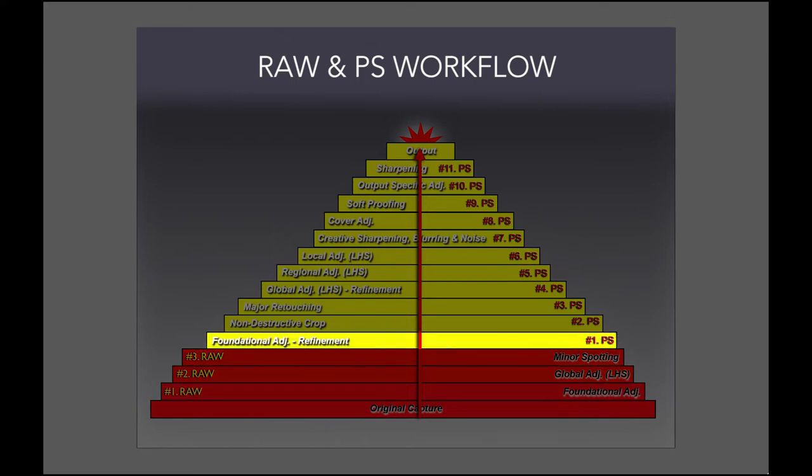Now I export my image into Photoshop where I refine my foundational adjustments. A good example of a refinement is applying a shadow and highlights adjustment. Raw is great at recovering highlight and shadow tonal range but it doesn't restore the contour or contrast in those tonal ranges.